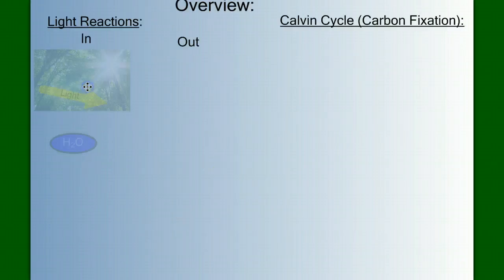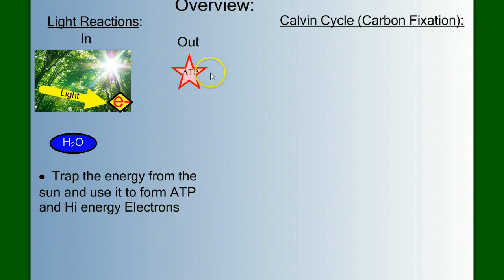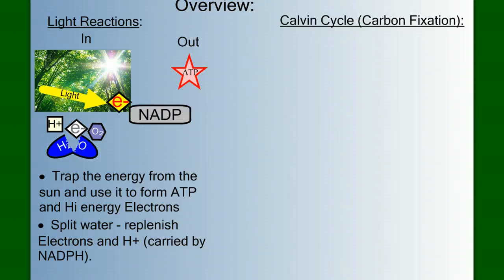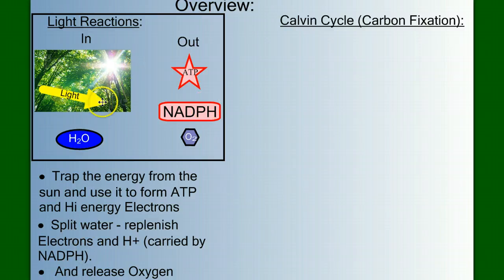Here's the short story. In the light reactions, we take in light and water. These are used to trap energy from the sun to form ATP and generate high-energy electrons. During the light reactions, water is split, which replenishes the electrons lost out of the light reactions, creates hydrogen ions, and also liberates the oxygen we see in the overall reaction. The high-energy electrons, plus these hydrogen ions, get picked up by a molecule called NADP to form NADPH — an energy carrier holding those high-energy electrons and hydrogens. So the light reactions take in light and water and produce ATP, NADPH, and oxygen, which is a waste product.